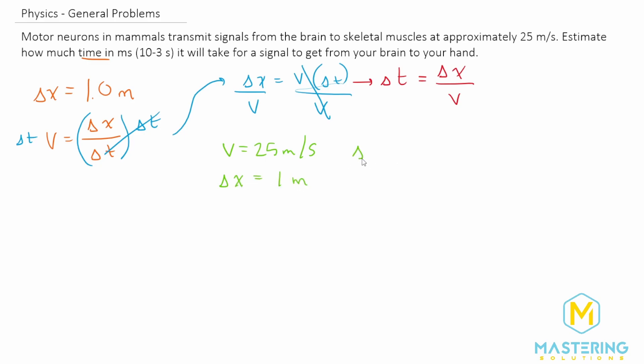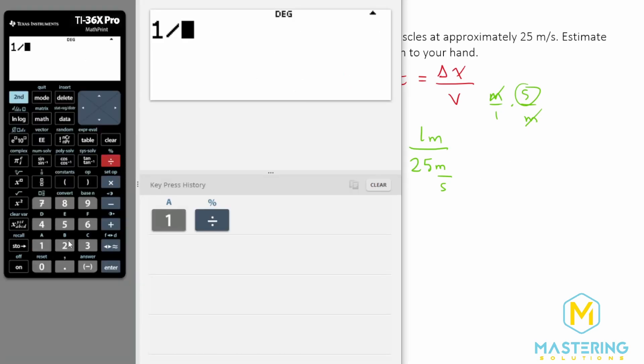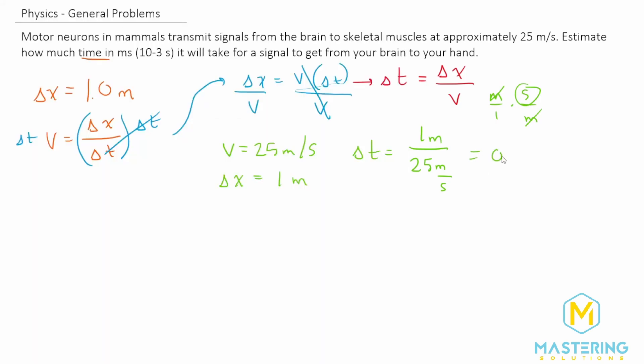So delta t will be equal to one meter divided by 25 meters per second. Whenever you're dividing by a fraction, you're multiplying by the reciprocal. We have seconds over meters, so the meters cancel and we're left with seconds, which is what we're looking for. This gives us 0.04 seconds.